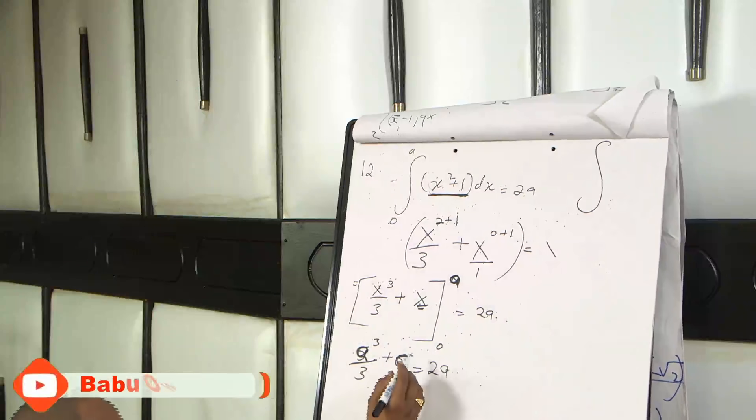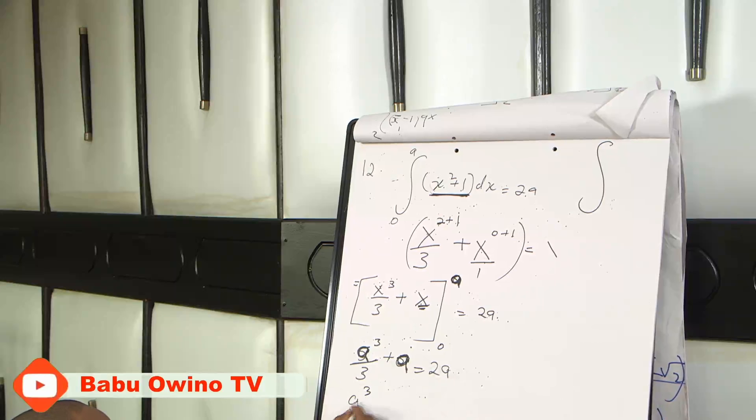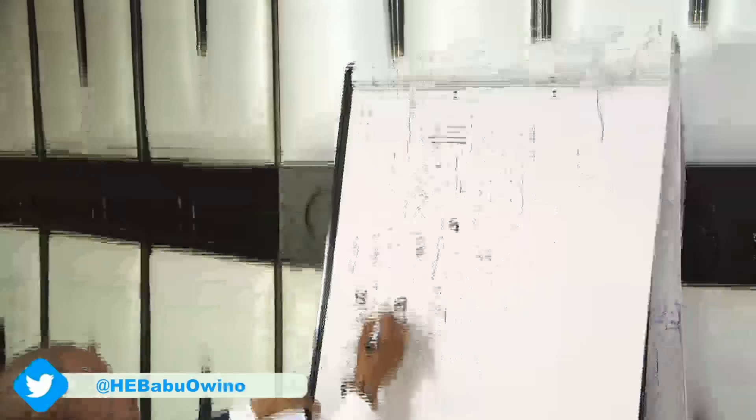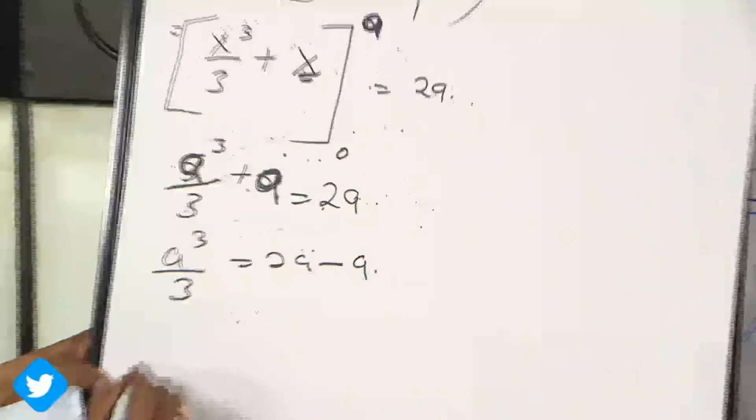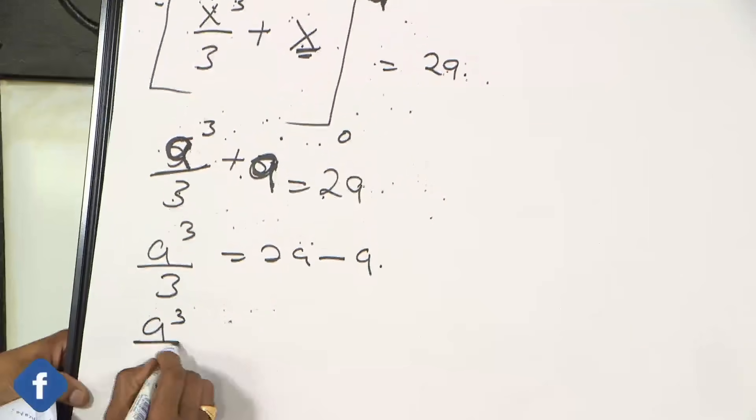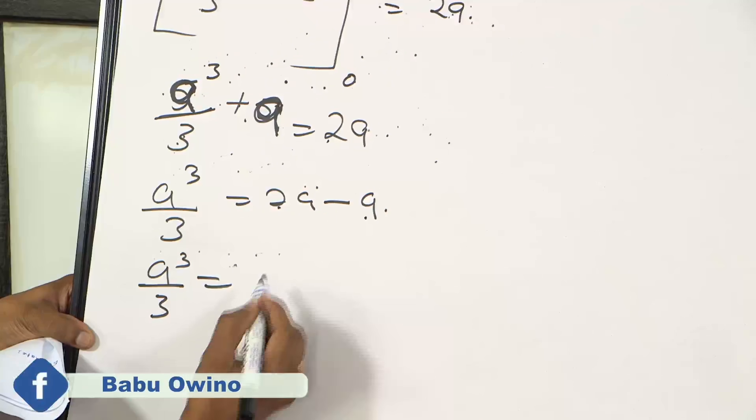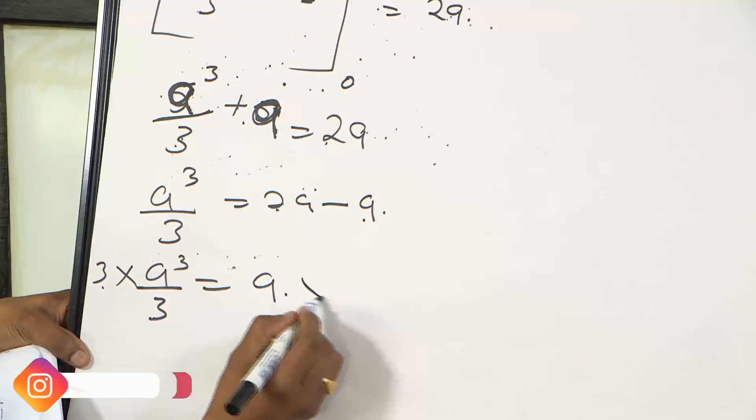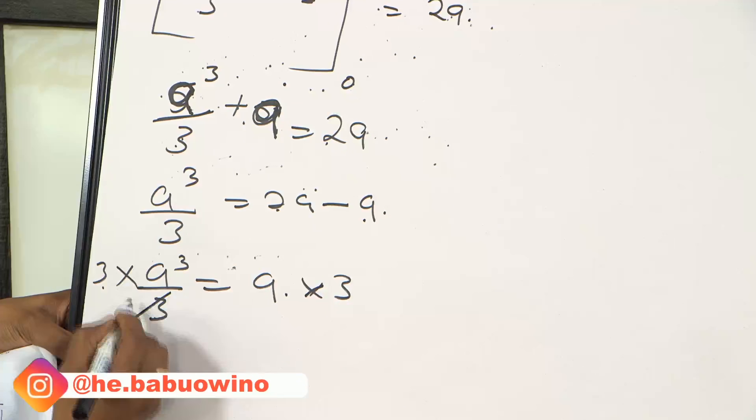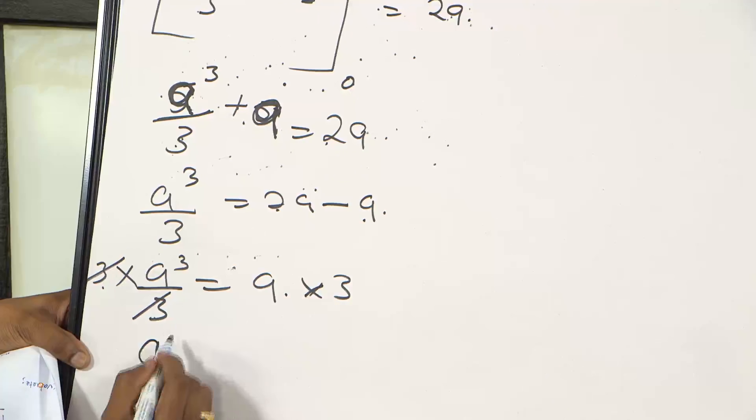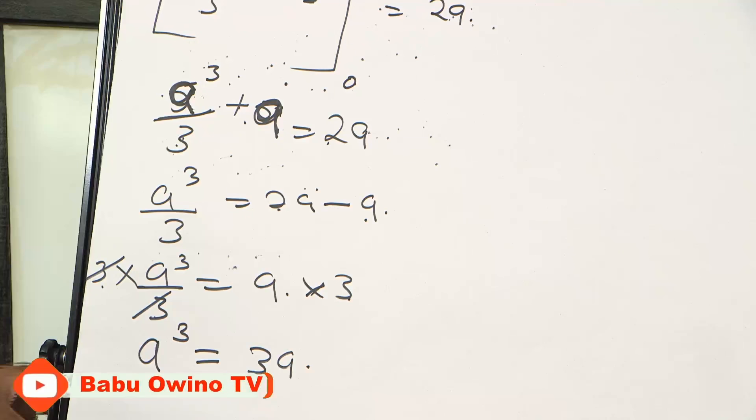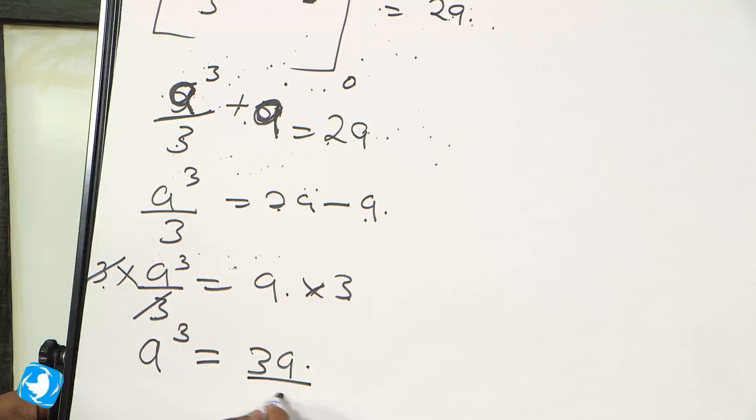Then collect the like terms. A raised to power 3 divided by 3 equals to 2A. When A crosses the other side, it becomes minus A. So A raised to power 3 divided by 3 equals to 2A minus A is A. Then cross multiply by 3, cross multiply by 3 both sides. This 3 and 3 cancels, then we have A raised to power 3 equals to 3A.